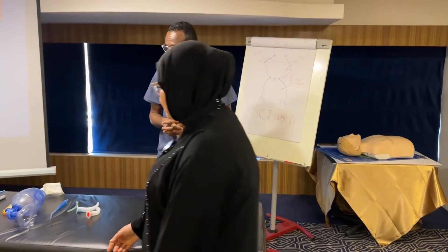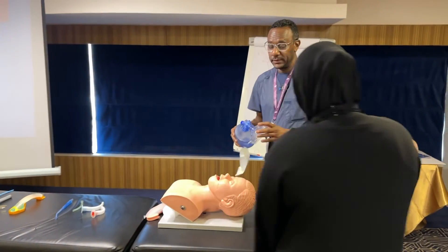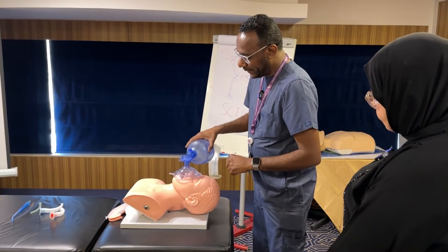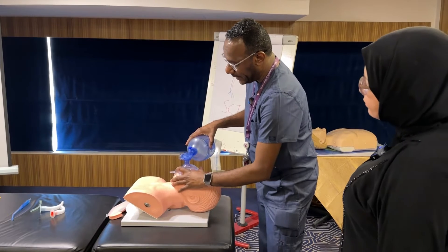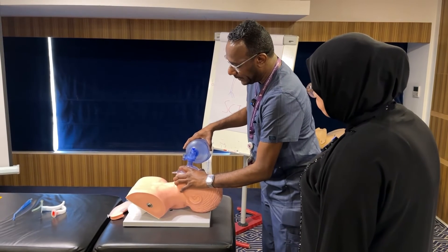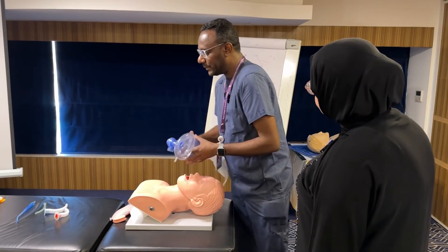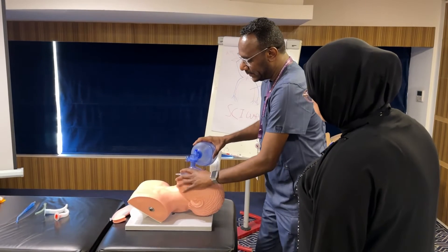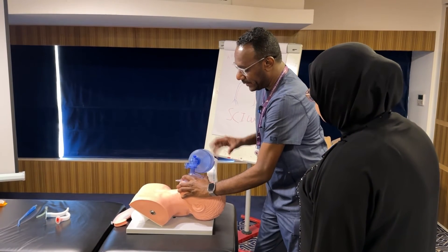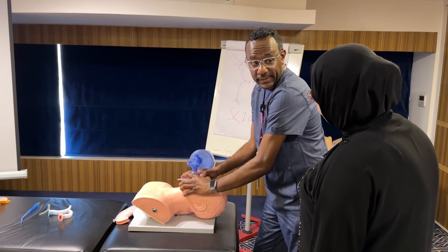I want to know how to use that. The bag-valve mask — this is really important to provide positive pressure ventilation. You can use it one hand or two hands. Apply it to the face like this and keep a tight seal — bring the face to the mask — and do a little bit of jaw thrust, then ventilate. If it's not working, you can put an OPA or nasopharyngeal airway and repeat. You can also use it two-person: one person holds the seal and the other ventilates, while assessing chest rise and end-tidal.